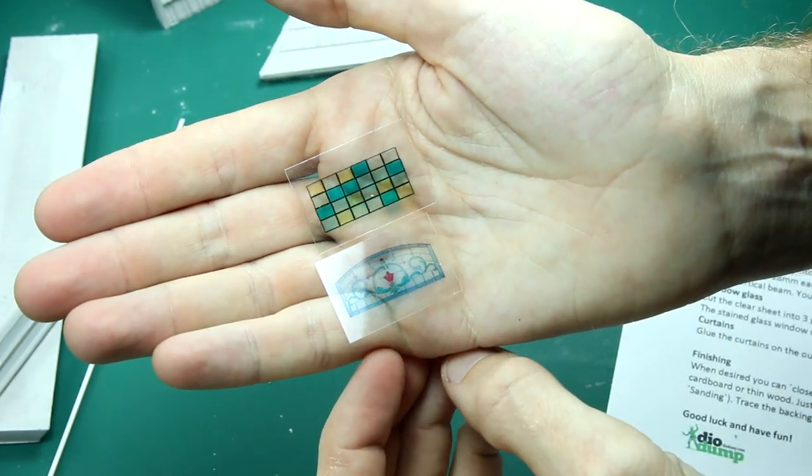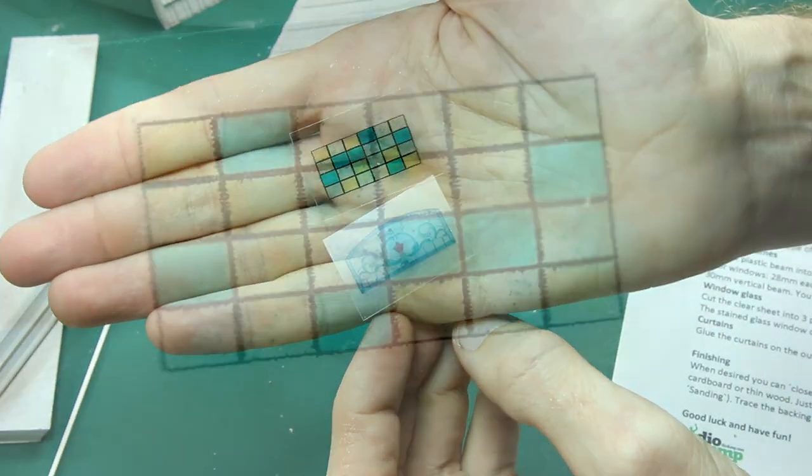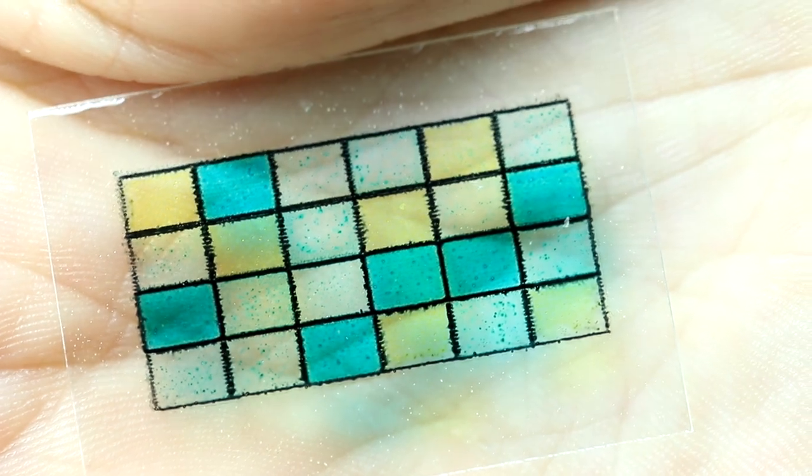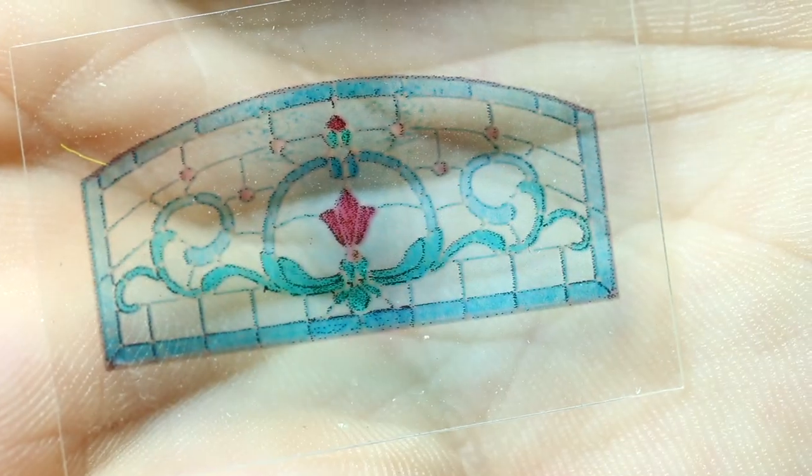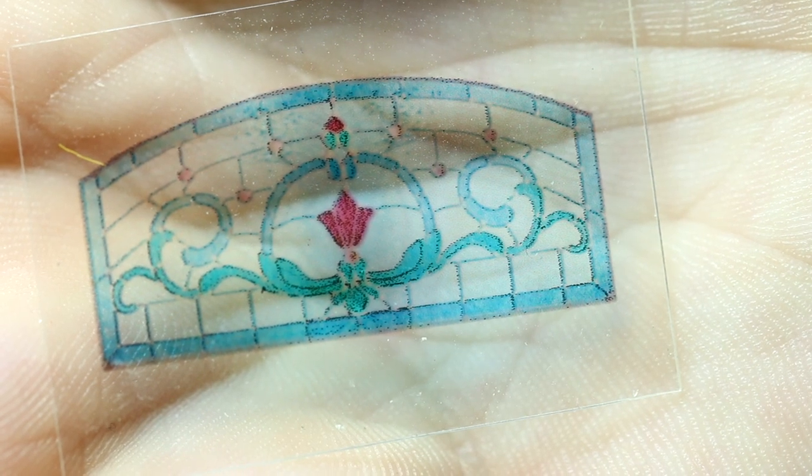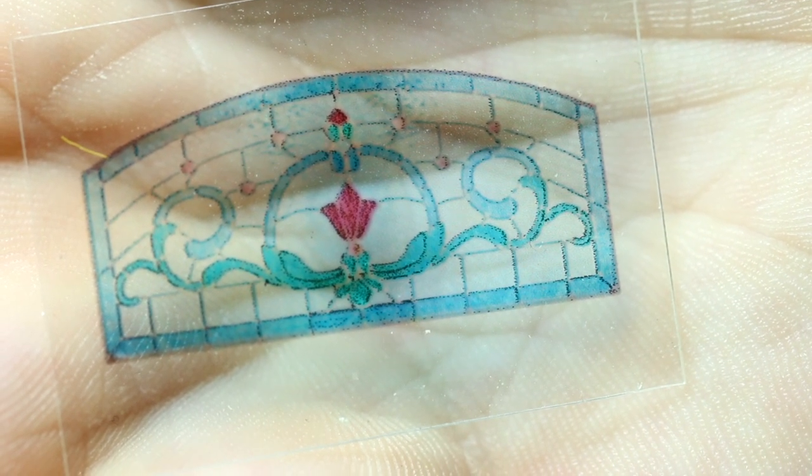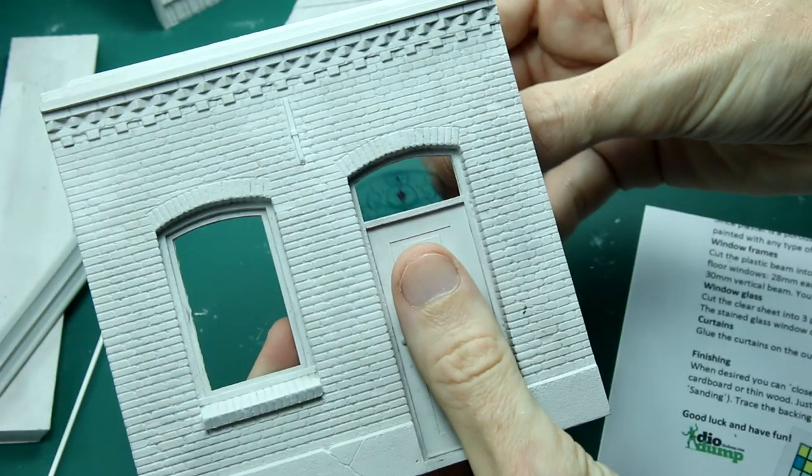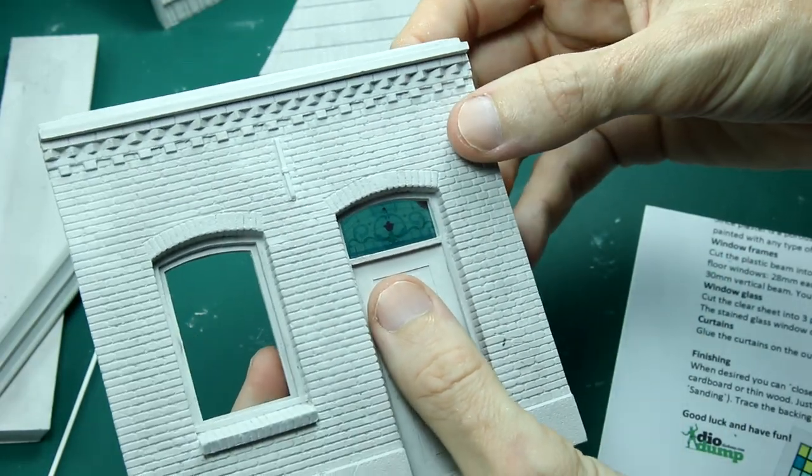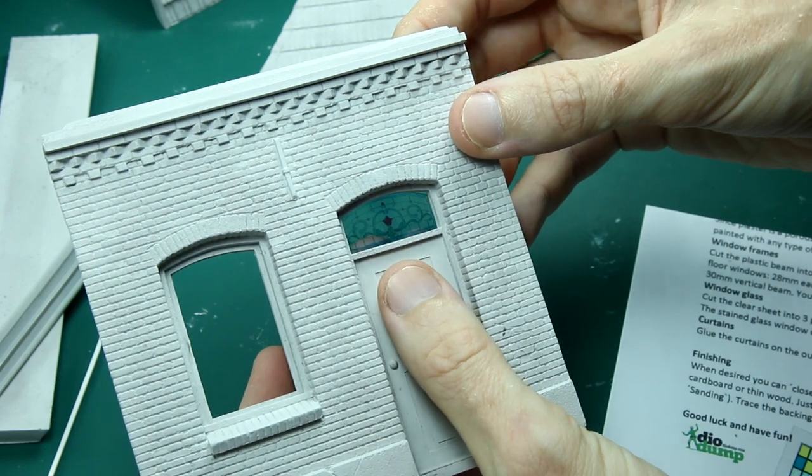And finally, a nice little addition, a little bit unusual, is these two pieces of acetate to act as stained glass windows. So that's a really nice idea. And it will just add a little bit more detail, a little bit more realism to the kit. I think that's a nice little inclusion. And you can see here above the front door, that's where the window will go. And that looks really good.